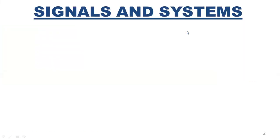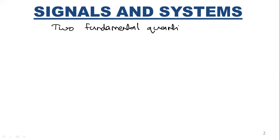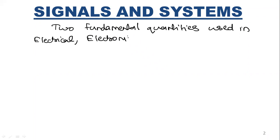When it comes to Signals and Systems, they are defined as two fundamental quantities used in all engineering fields — used in electrical, electronics, and communication engineering. Signals and systems are used everywhere.